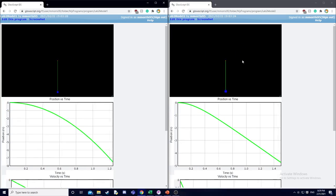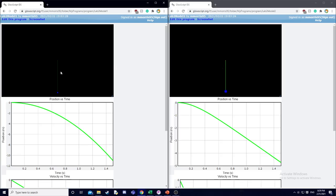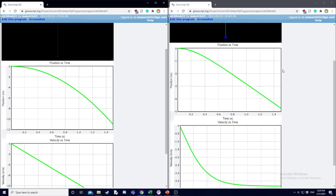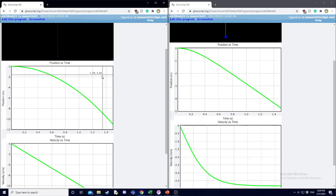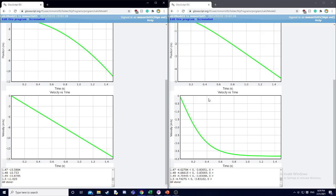So when I run the programs, one of the biggest differences you see is that the first model has the ball going a much greater distance downward. This is reflected in a difference in their position versus time graph. And then we also see a different trend for the velocity versus time that I'll get into momentarily.